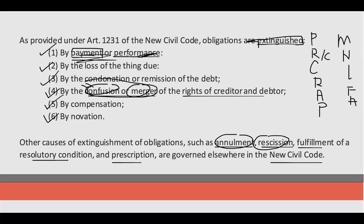So alam nyo na ibig sabihin nang confusion or merger. Yan. Yung N is Novation, which is the change. So pag sinabing Novation, change — may nagbago. Binago ang object kaya may Objective Novation, and subject — so later class, ididiscuss din naman natin yung pagkakaiba ng objective and subjective.